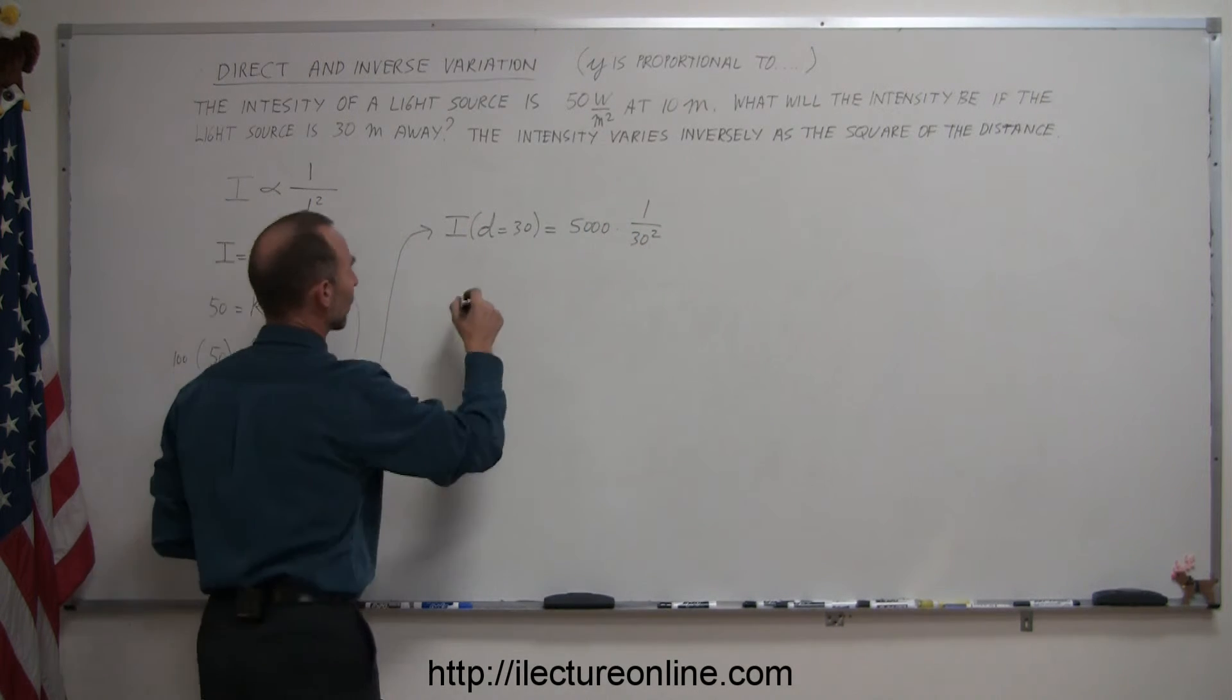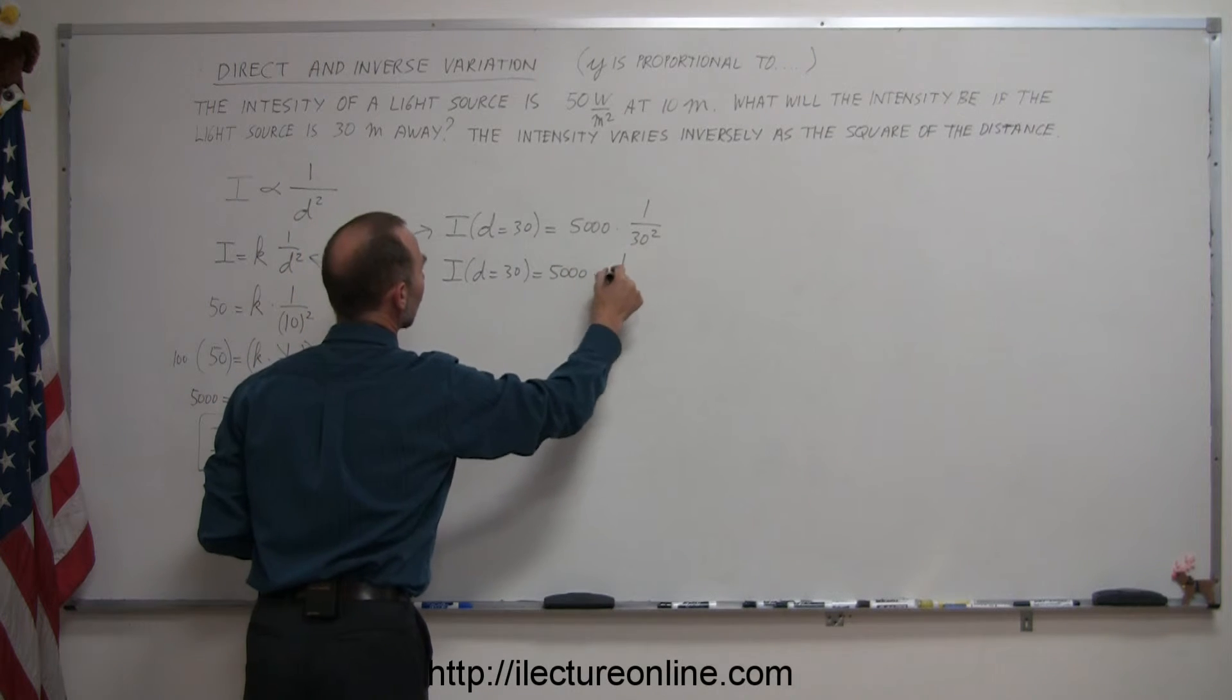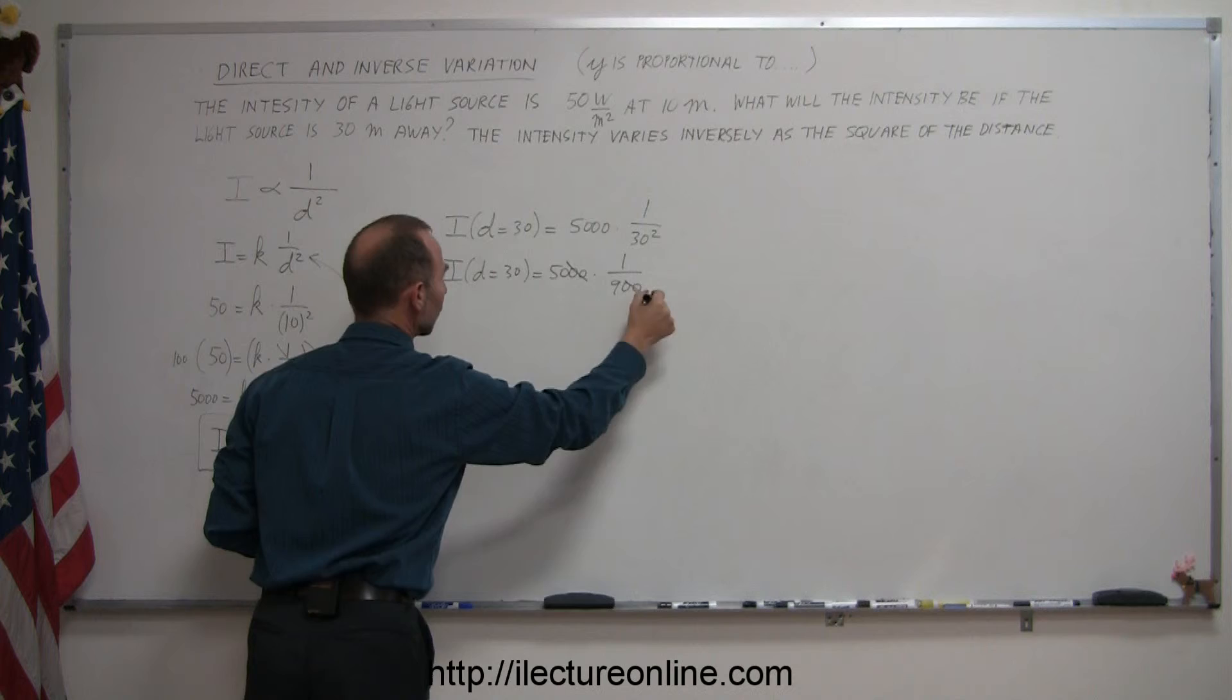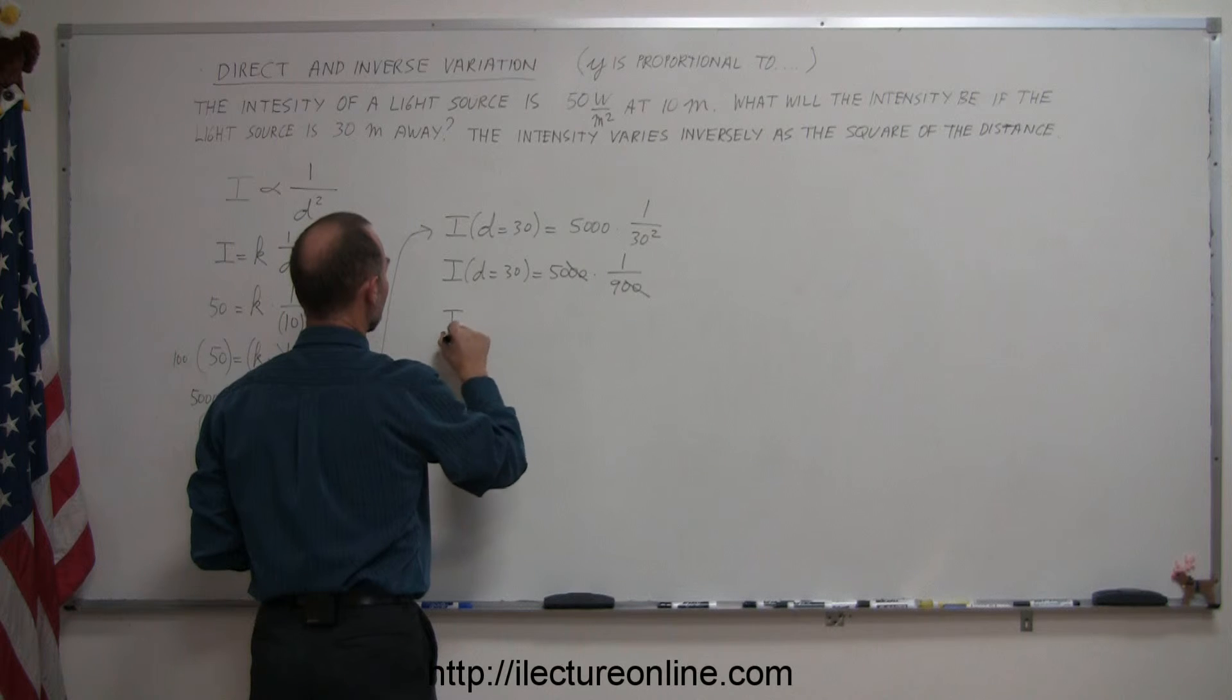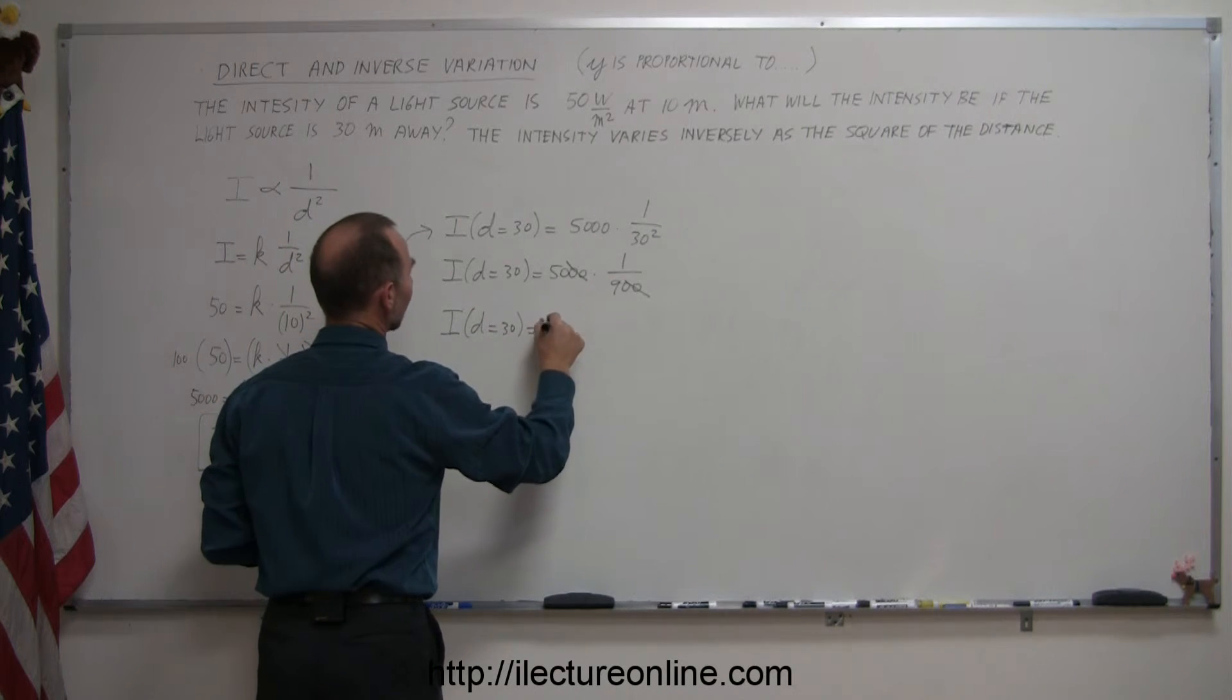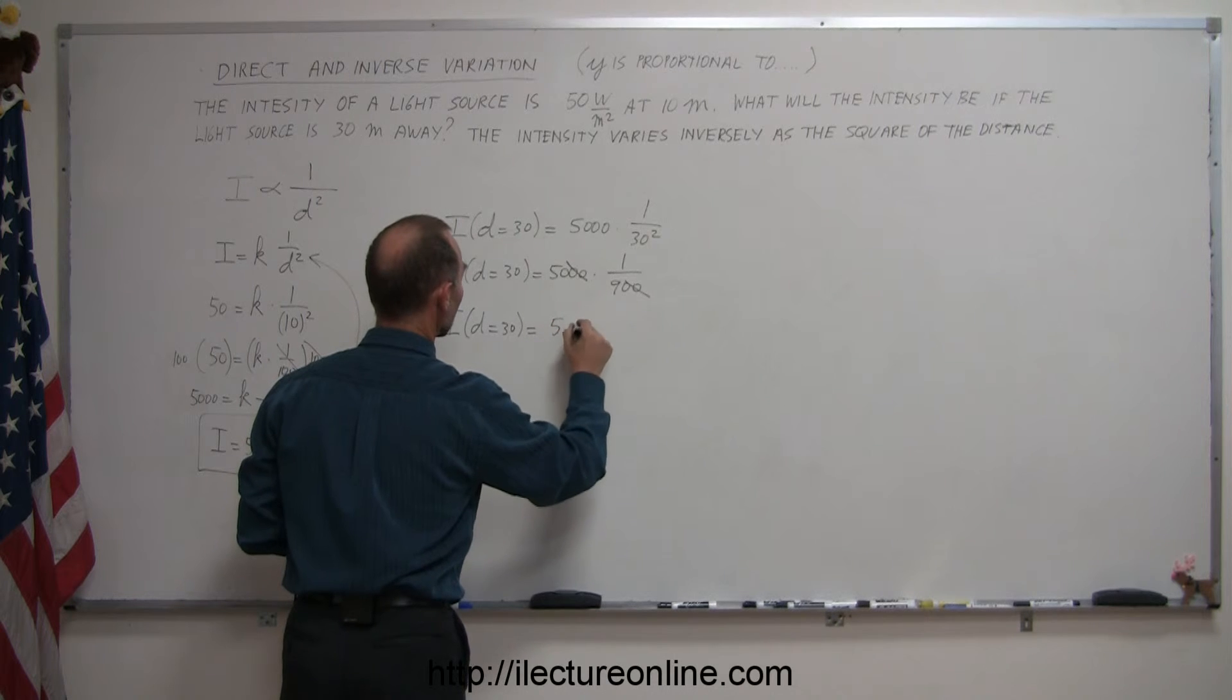And working that out, we have the intensity when the distance is equal to 30, that's equal to 5000 times 1 over 900. So these two zeros cancel out those two zeros, and 50 divided by 9 is about 55 or 56. So intensity when d is equal to 30 is equal to about, oh not 56, but 5.6, 5.6 watts per square meter.